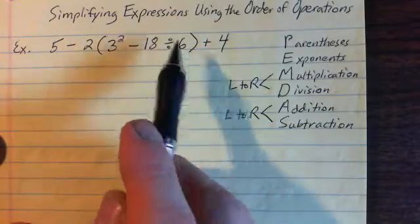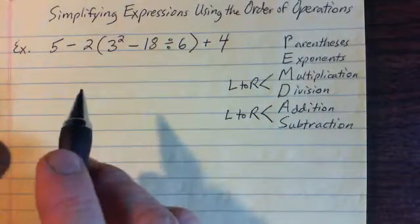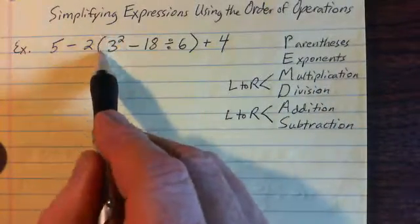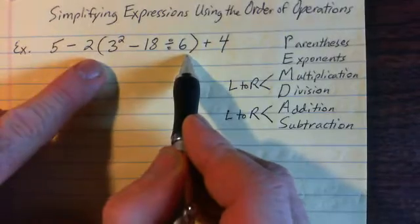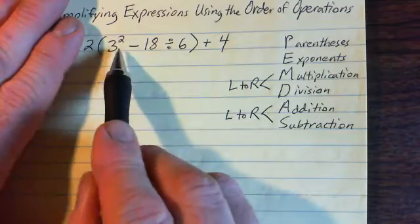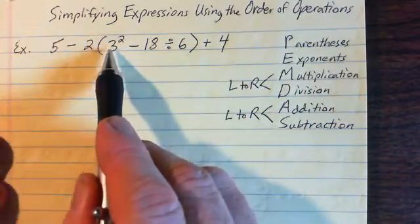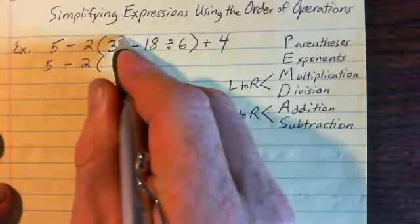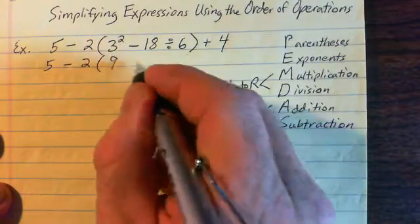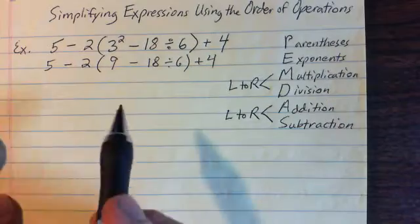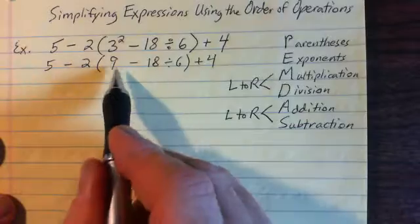Look at this example — we have parentheses, exponents, multiplication, and division. Parentheses comes first, so I'm going to work on what's inside the parentheses. Within the parentheses, exponents come first, so I'll compute 3 squared: 3 times 3 is 9. I'm going to put down 9 — that's the first step.